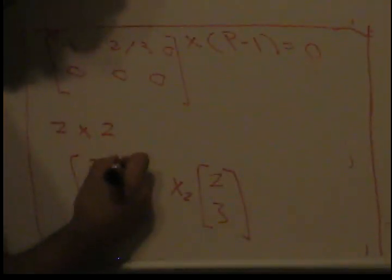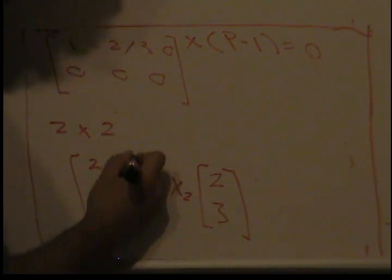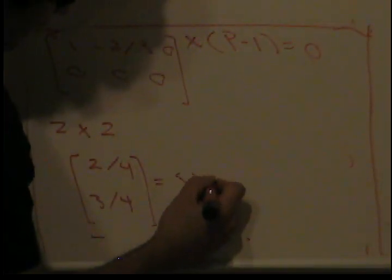So you're going to get 2 over 4 and 3 over 4. So therefore, this is called the steady state vector.